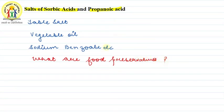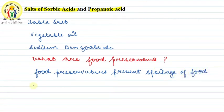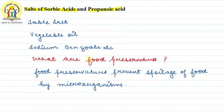Food preservatives are the substances that prevent spoilage of food. They prevent spoilage of food by microorganisms. They also retard oxidation-related spoilage of food, so that we can consume it safely.